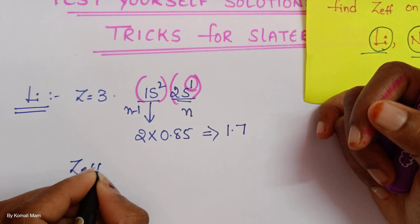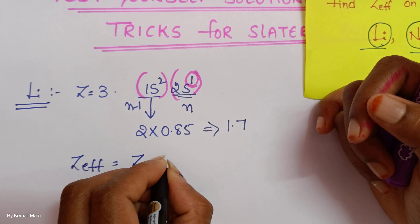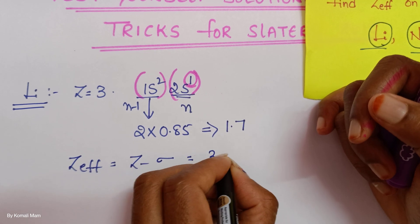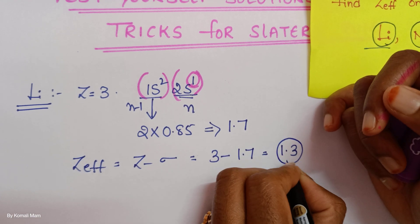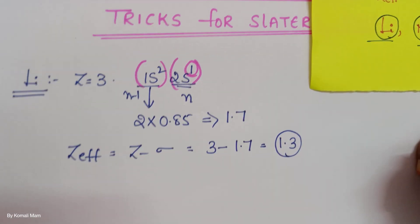Then Z effective formula is what students? Z minus sigma. Z is atomic number 3, sigma is 1.7. That is 1.3 is the effective nuclear charge. Is it clear?